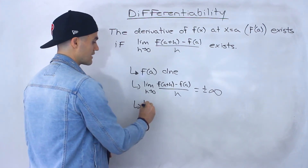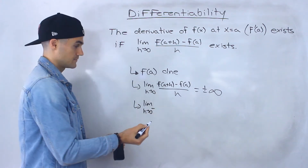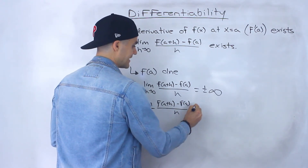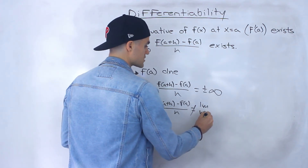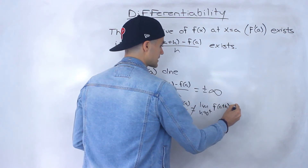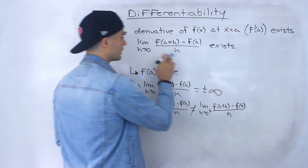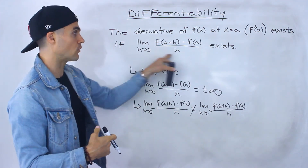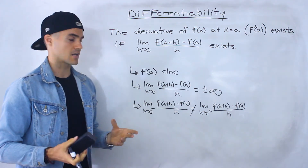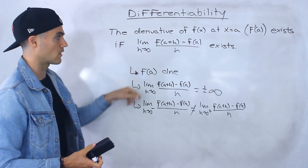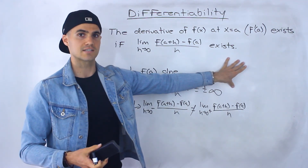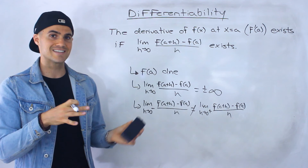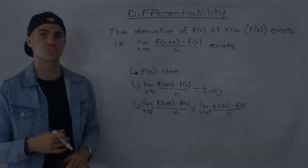Another case is if the limit as h approaches 0 from the negative side of f of a plus h minus f of a all over h doesn't equal the limit as h approaches 0 from the positive side. Remember, in order for a limit to exist it has to approach the same value from both sides. If it's approaching different values from both sides, then the overall limit isn't going to exist. So that's what we're going to be covering in the next couple of videos — cases where a function isn't differentiable or the derivative doesn't exist at a certain x value.